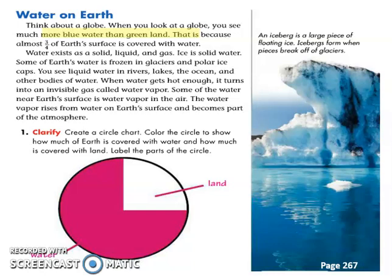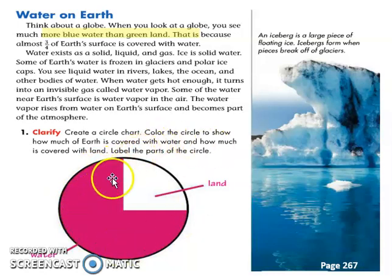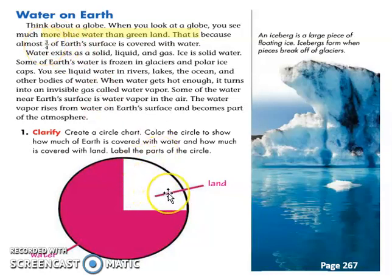Think about a globe. When you look at a globe, you see much more blue water than green land. When we try to illustrate that in a pie chart, the size of Earth's water is three quarters. The land is just a small part. Water exists in solid, liquid, and gas.